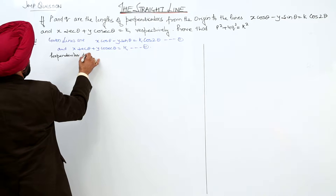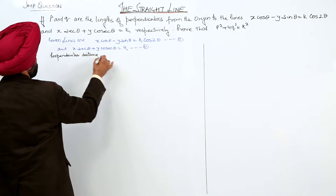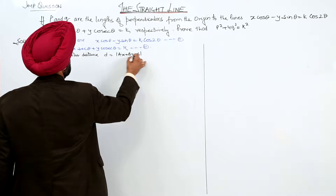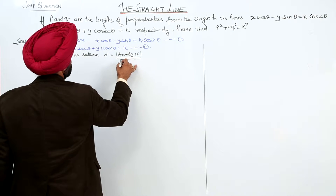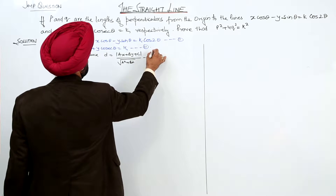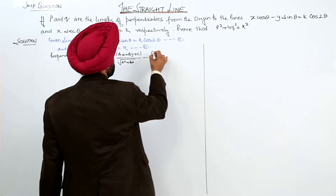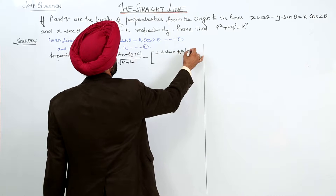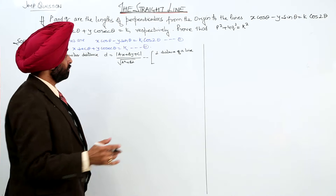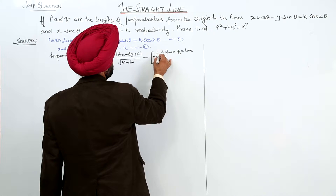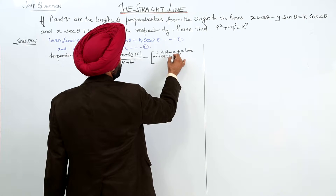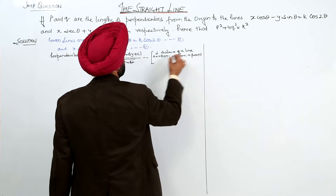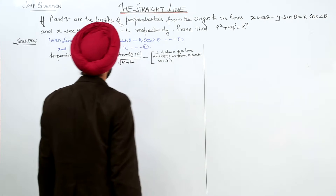We know the perpendicular distance formula: d = (ax₁ + by₁ + c) / √(a² + b²). This is the perpendicular distance from a point (x₁, y₁) to a line in the general form ax + by + c = 0.